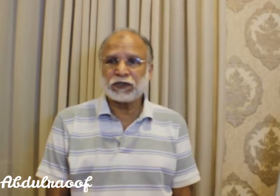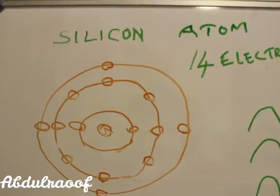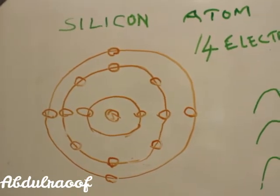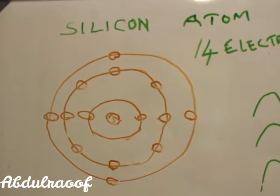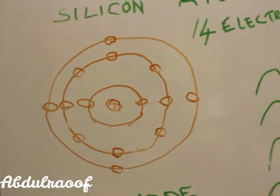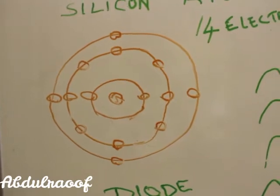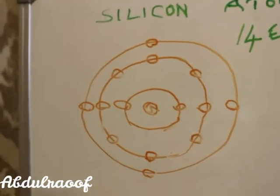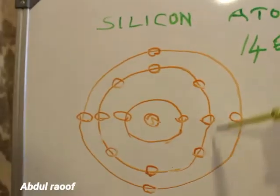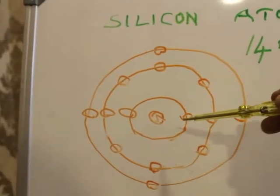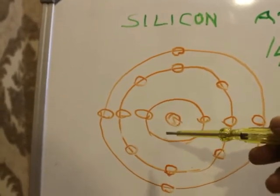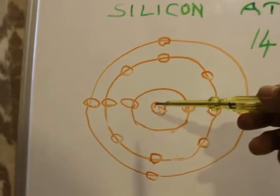Electronics, as the name indicates, is related with the electrons. Every substance, every material has atoms. This picture is just a diagram — it's the atomic structure of silicon. In silicon there are 14 electrons surrounding and rotating around the atom. This is silicon; this center is the nucleus.